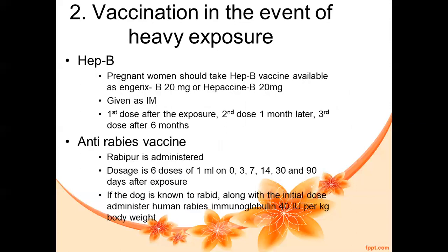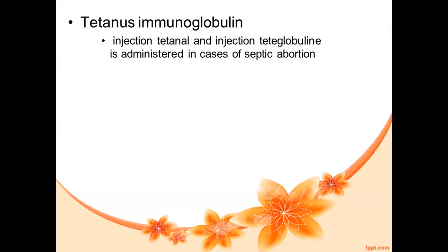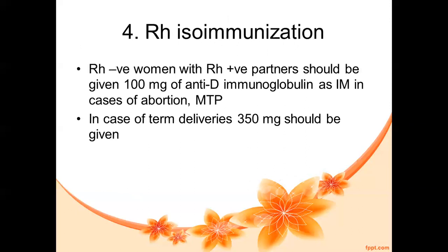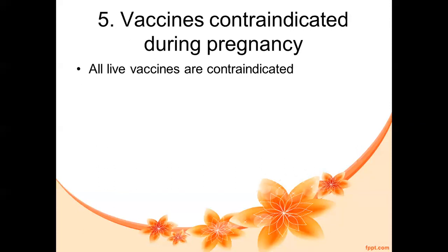Summary of safe vaccines during pregnancy: routine — tetanus toxoid; in the event of heavy exposure — Engerix-B or Hepaxin-B for hepatitis B, Rabipur for rabies, and tetanus immunoglobulin (Tetanol/Tetaglobulin) for tetanus infection; during epidemics — Typhine for typhoid and Haffkine's instant for cholera; anti-D immunoglobulin for RH-negative women with RH-positive partners. All live vaccines are contraindicated during pregnancy.